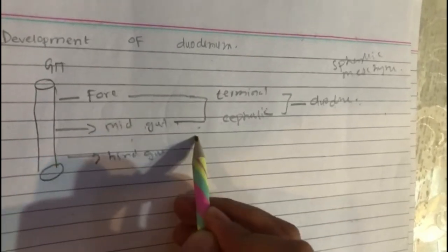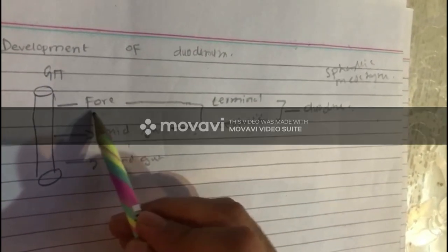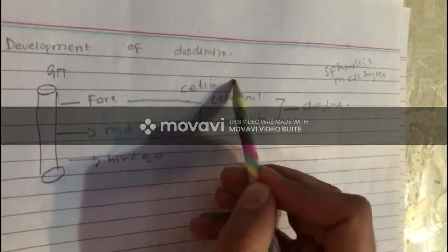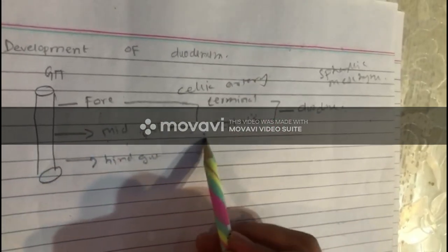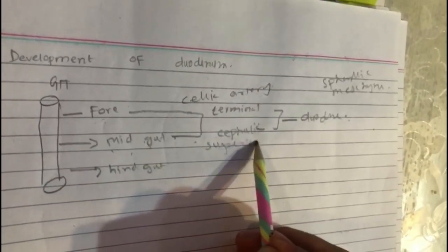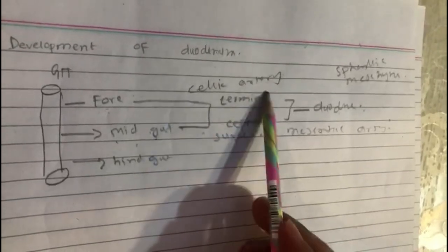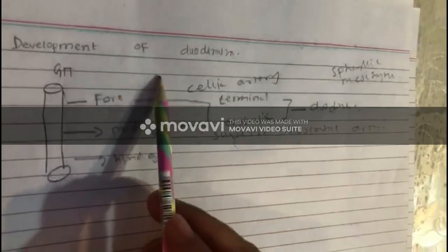Since the duodenum is derived from both parts, its blood supply also comes from both. The foregut is supplied by the celiac artery and the midgut is supplied by the superior mesenteric artery. So both the celiac artery and the superior mesenteric artery supply the duodenum.